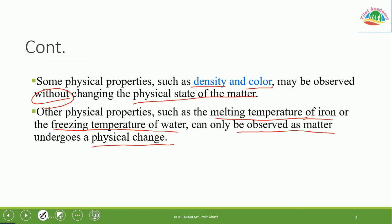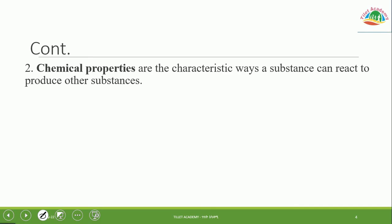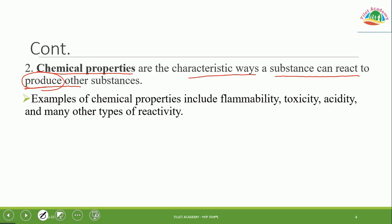Chemical properties are the characteristics in which a substance can react with another substance to produce another substance. Examples of chemical properties include flammability, toxicity, acidity, and other types of reactivity.